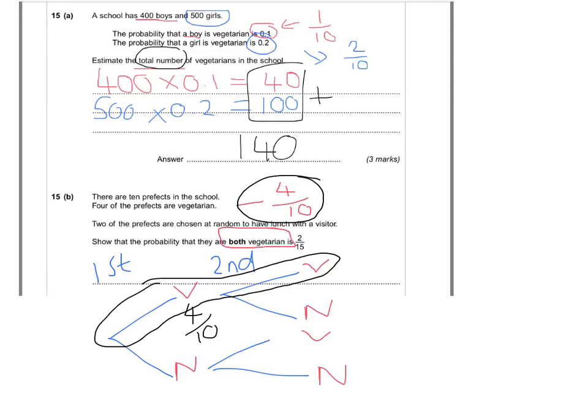Now, if you've already picked one of the vegetarians, there's only going to be 3 of those vegetarians left. And if I picked one out of the 10 people, there's only going to be 9 left. So, on the second pick, there's only 3 out of 9 that could be vegetarians.